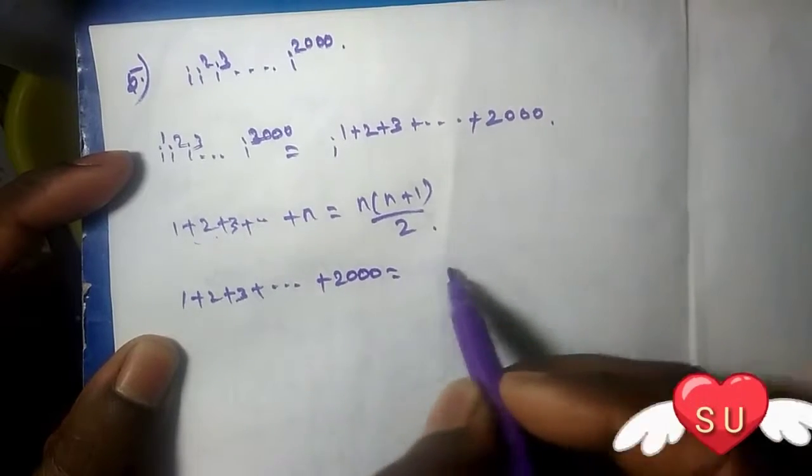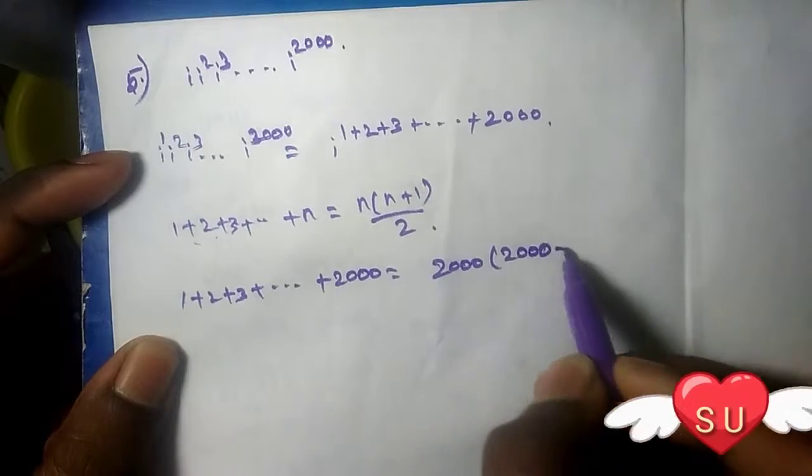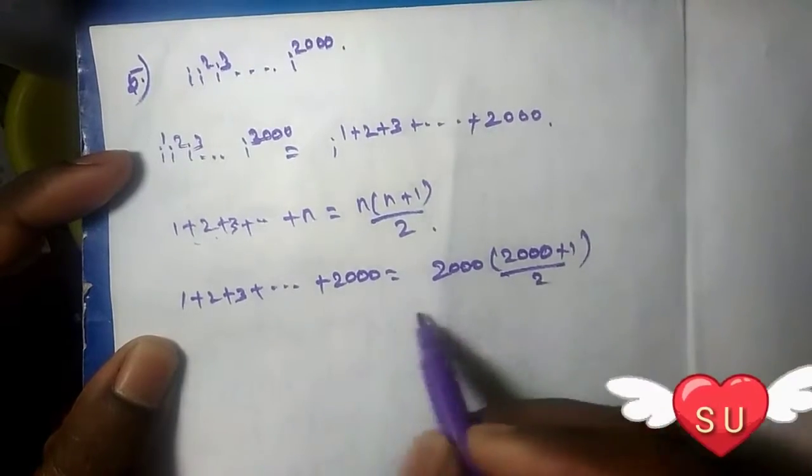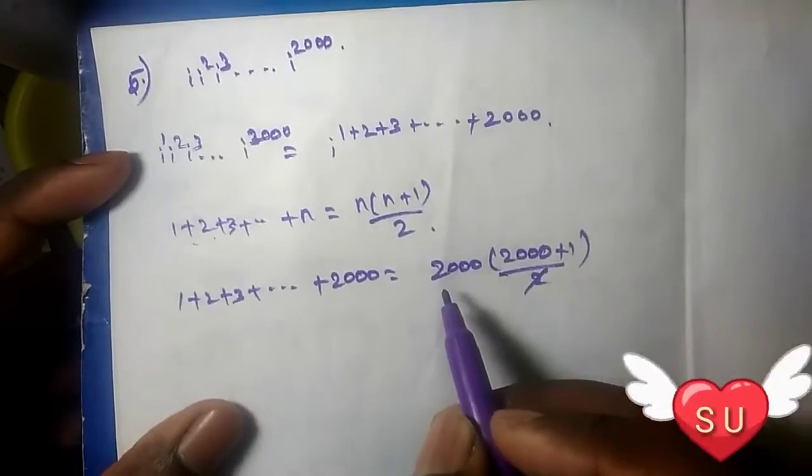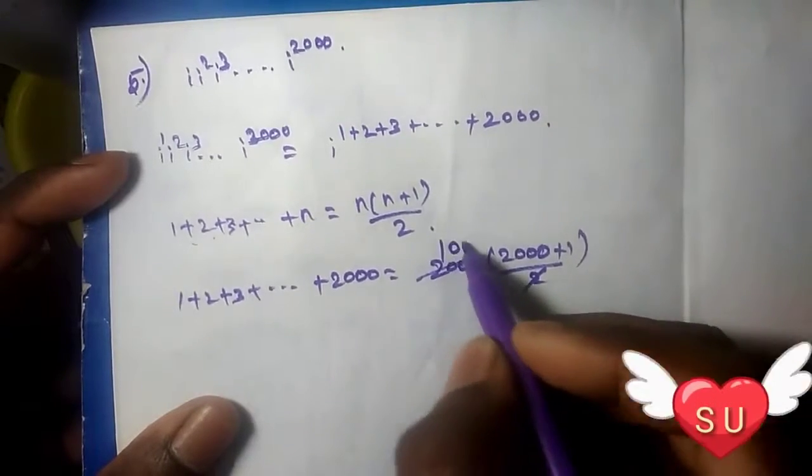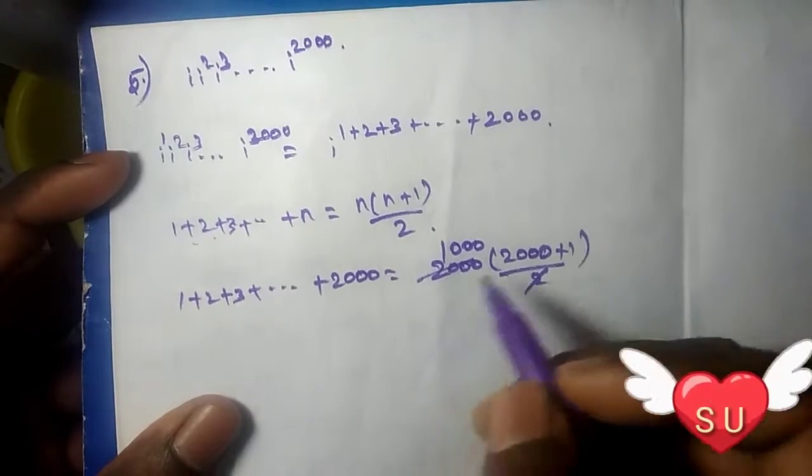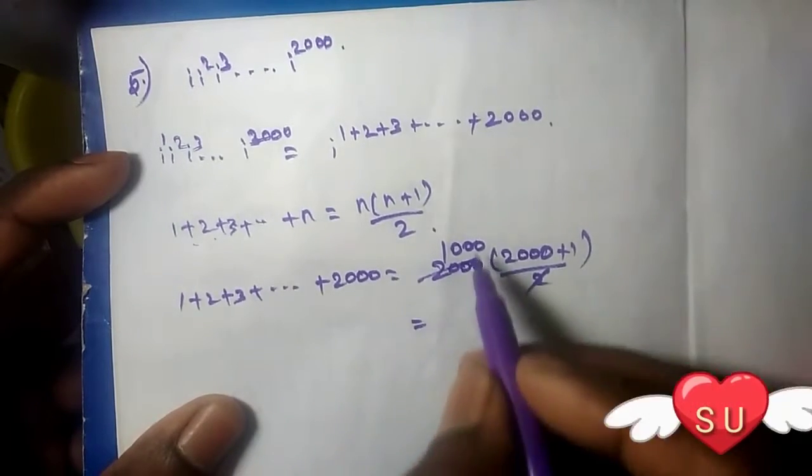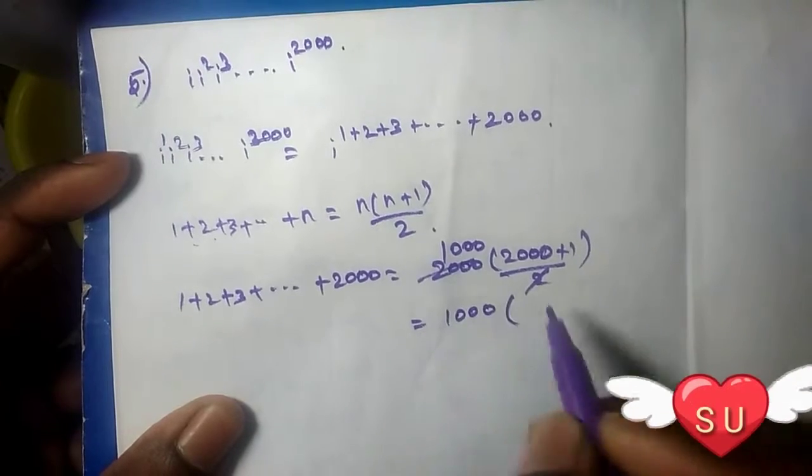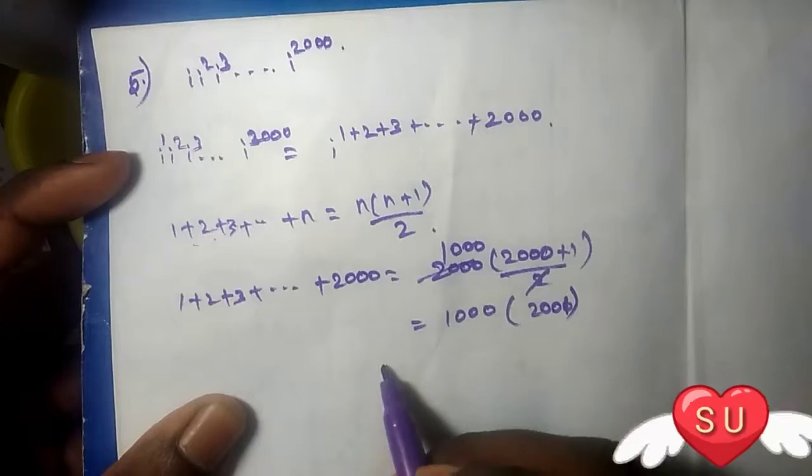So this formula is 2000 into 2000 plus 1 divided by 2. So we cancel one number, so it's thousand into two thousand one.